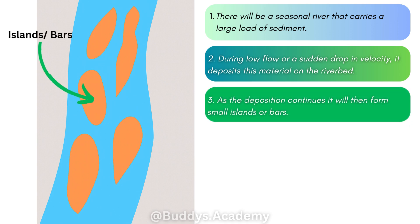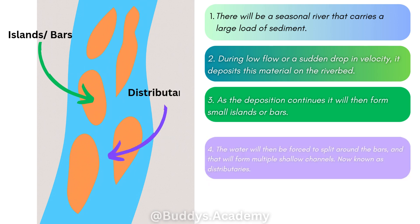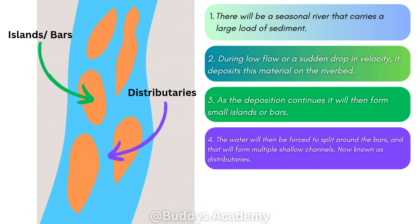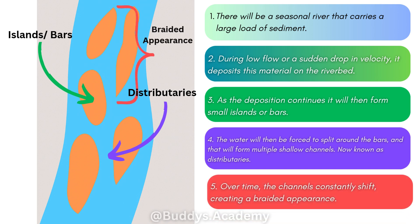As deposition continues, it will form small islands or small bars, as you can see in the diagram. Those small islands form because of your continuous deposition. The water is then forced to split around these bars or islands, forming multiple shallow channels known as distributories. Over time, the channels continuously shift, which creates a braided appearance.